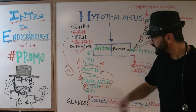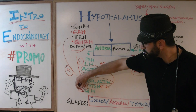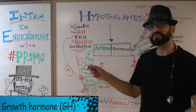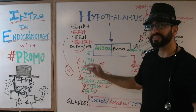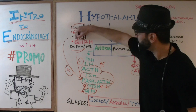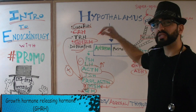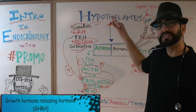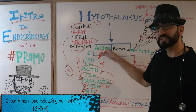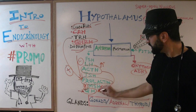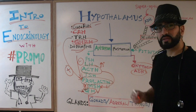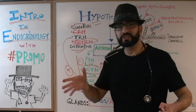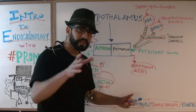The last one is GH — growth hormone. Growth hormone is under the control of growth hormone releasing hormone, which is secreted from the hypothalamus and works on the anterior pituitary gland to trigger the release of growth hormone.